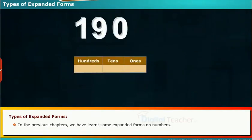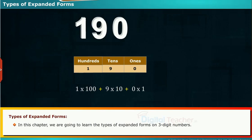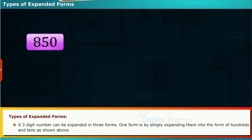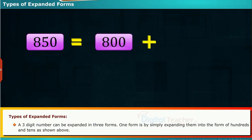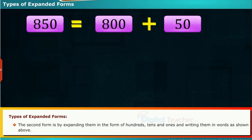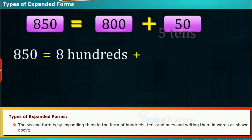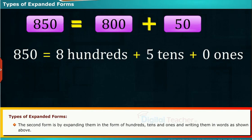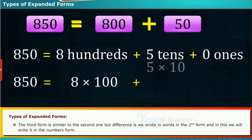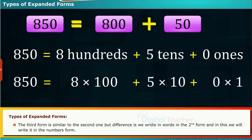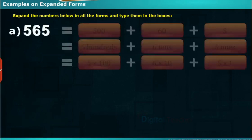Let us discuss the types of expanded forms. In the previous chapters we learned some expanded forms of numbers. A 3 digit number can be expanded in three forms: the first by simply expanding into hundreds and tens; the second by expanding into hundreds, tens and ones and writing them in words; and the third is similar to the second but written in number form rather than words. Let us see some examples on expanded forms.